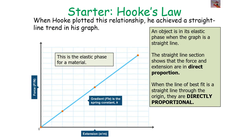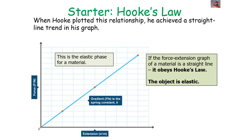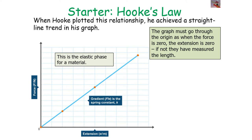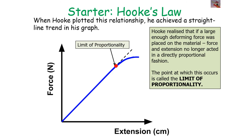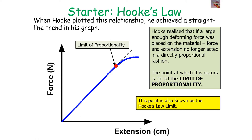When Hooke plotted force against extension, he achieved a straight-line trend. An object is in the elastic phase when the force-extension graph through the origin is a straight line, showing force and extension are directly proportional. If the force-extension graph of a material is a straight line, it obeys Hooke's Law and the object exhibits elastic behavior. The graph must go through the origin — when force is zero, extension must be zero; otherwise you are measuring length rather than extension. The point at which force and extension are no longer directly proportional is called the limit of proportionality, also sometimes referred to as the Hooke's Law limit.